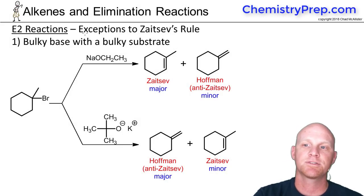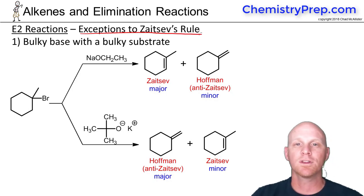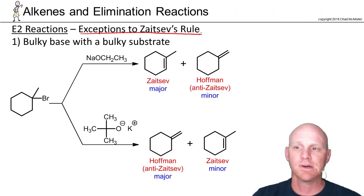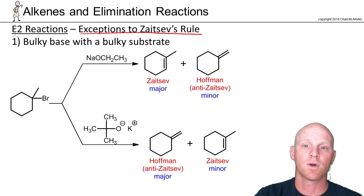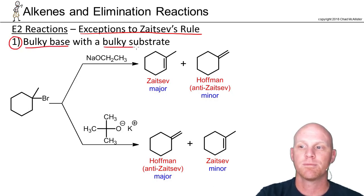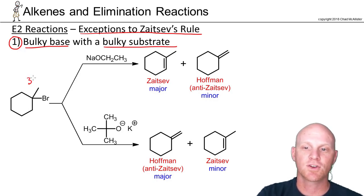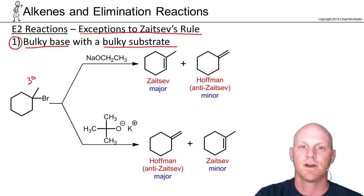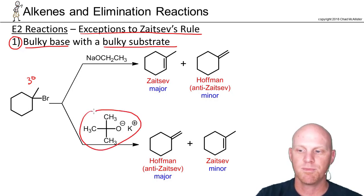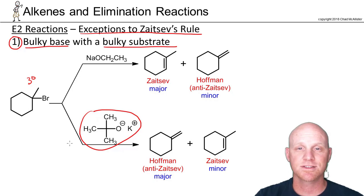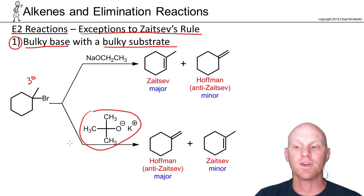Now we need to talk about some exceptions to Zaitsev's rule. There are really four main ones, but two are definitely more important than the other two. The first and more important one involves a bulky base along with a bulky substrate, typically a bulky alkyl halide. In this example we have a tertiary halide, and potassium tert-butoxide is what we call a bulky base — it is by far the most common bulky base you're likely to encounter.